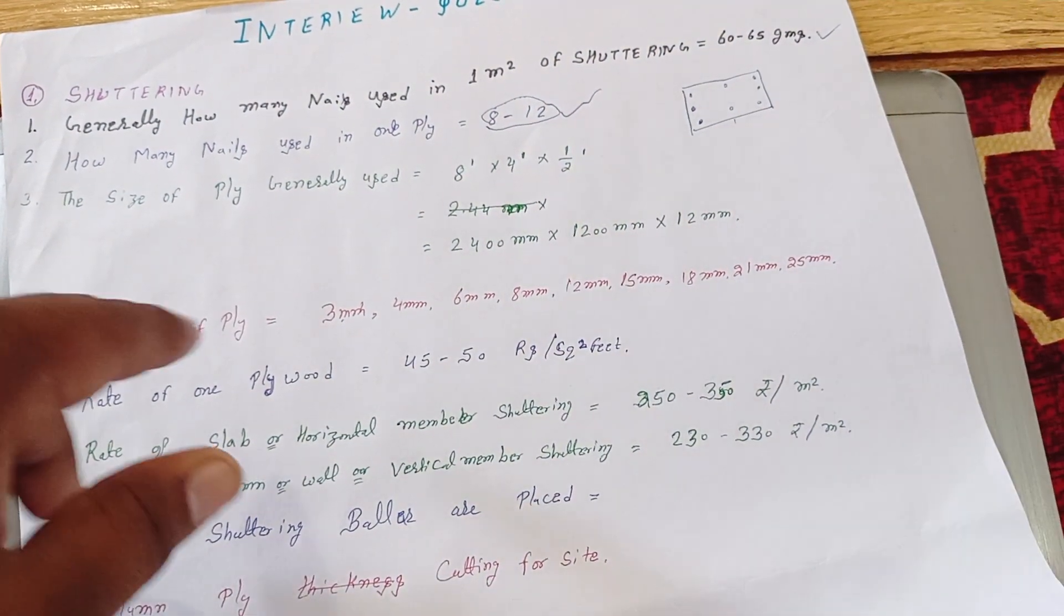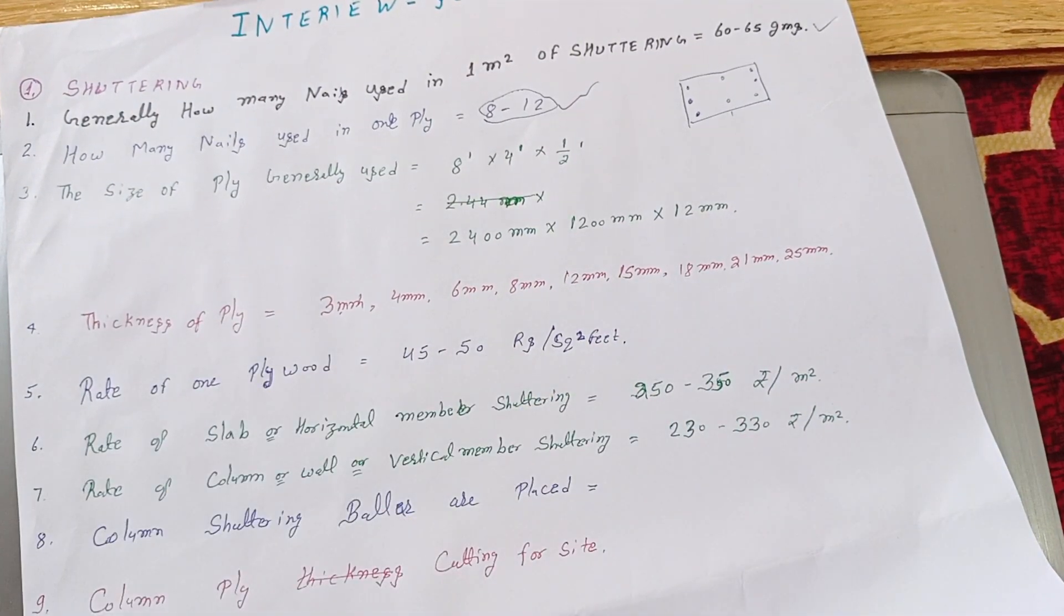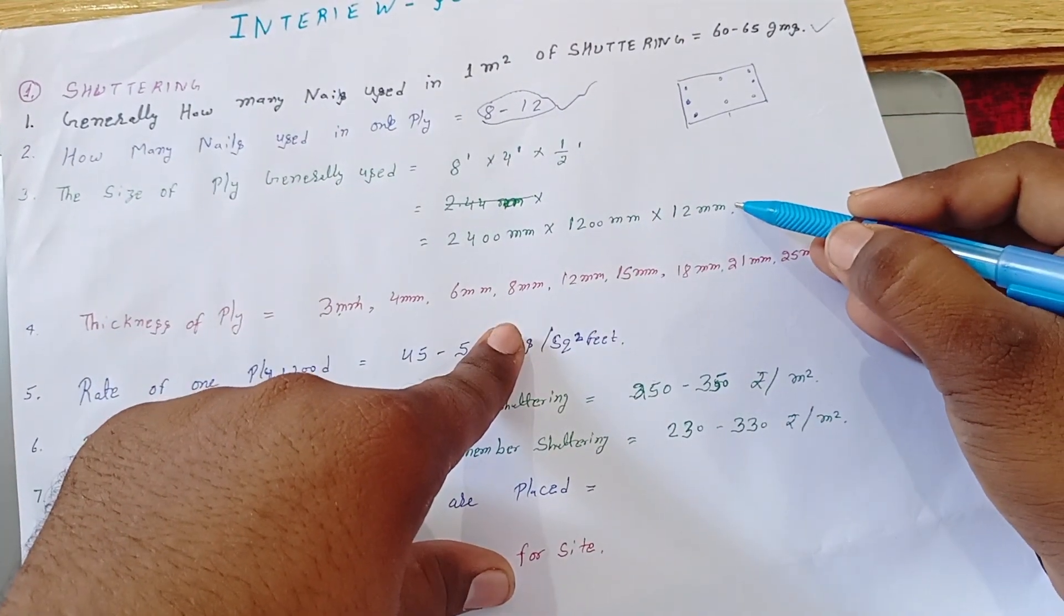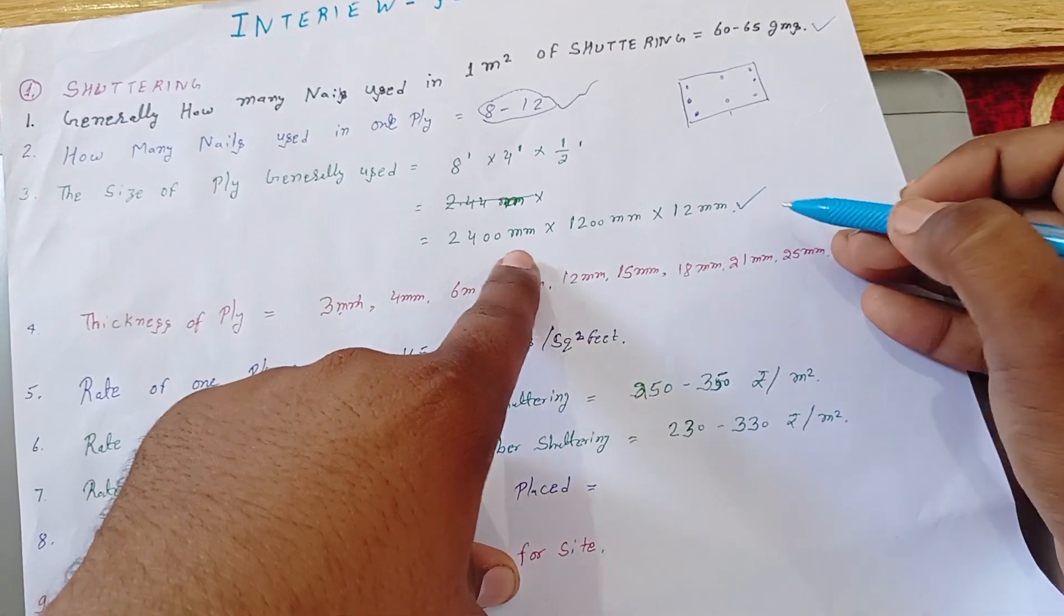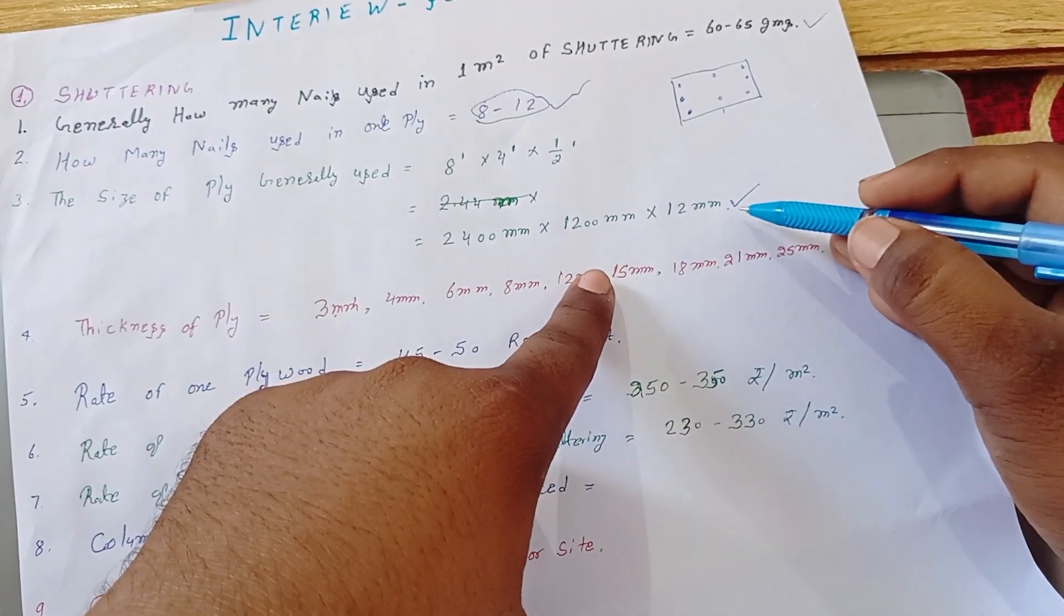Next we have used, they ask about the size of generally ply is used. 8 inch multiply into 4 inch into half inch, or generally we can call 2400 and 1200 and 12 mm ply.